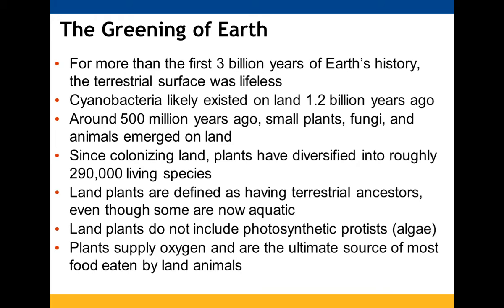Once they got a hold of land and started colonizing it, they diversified. The land plants we have now have some form of terrestrial ancestor. Some land plants are now aquatic, but even those had a terrestrial ancestor at some point. They don't include algae and are a great source of oxygen and food for land animals.